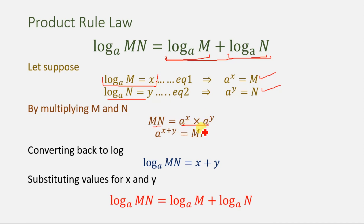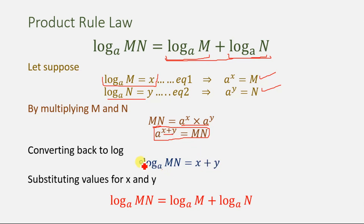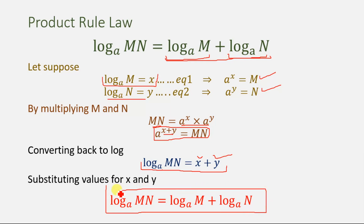Multiplying those two terms gives us a to the power x plus y equals mn. Converting this back into logarithmic form, we get log base a of mn equals x plus y. Substituting the values x equals log base a of m and y equals log base a of n, we get log base a of mn equals log base a of m plus log base a of n. This is the product rule law of logarithm.